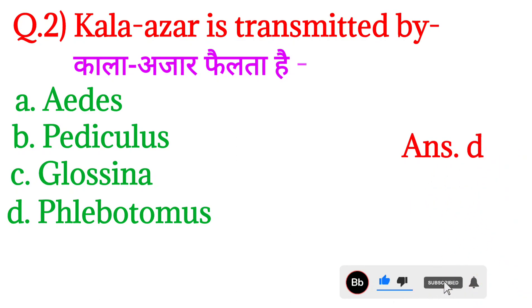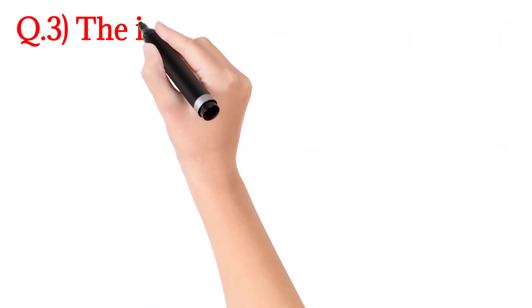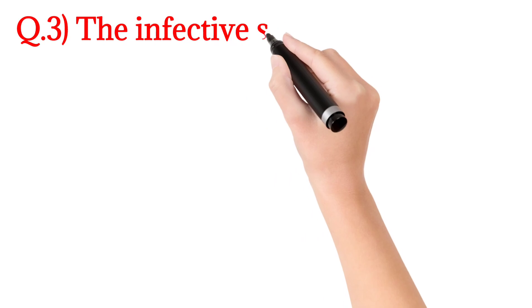Kala azar, Phlebotomus — jise sand fly bhi kehte hain — uske dwara failta hai. Question number three.